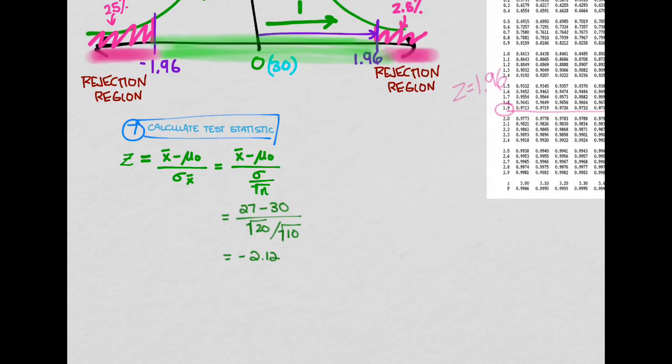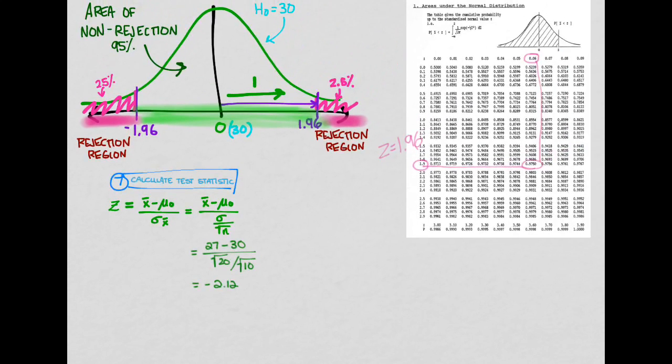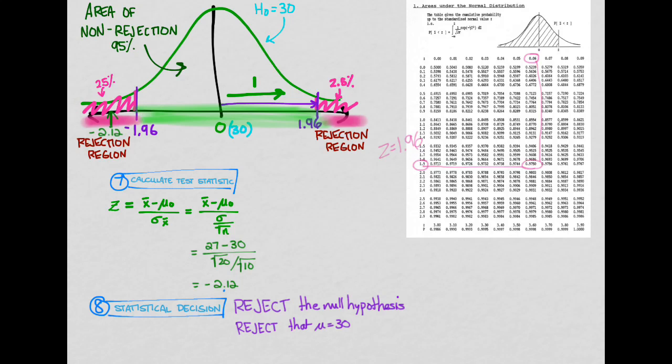So now where does negative 2.12 fall on our curve? Well, it falls right here, and that's smack dab within the rejection region. So we are going to reject that null hypothesis. We're going to tell that guy, you know what, you're wrong. The mean is not 30. So our statistical decision is to reject the null hypothesis. We're going to reject that mu equals 30.